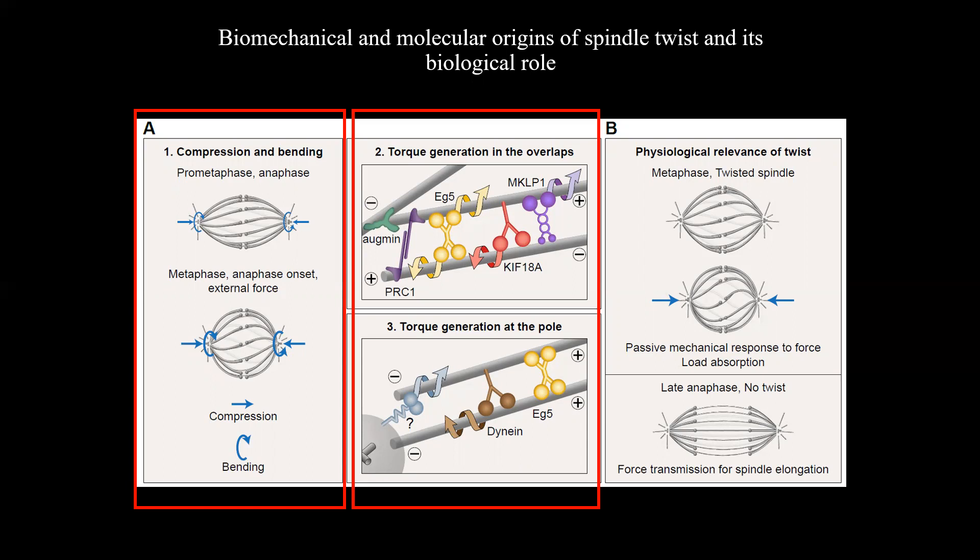Intriguingly, the strongest effect on the spindle twist was obtained by depletion of the HAUS6 or HAUS8 subunits of the augmin complex. Given that augmin depletion reduces the microtubule number within bridging fibers, we suggest that the altered twist is related to the reduced anti-parallel overlaps where torque generating motors bind.